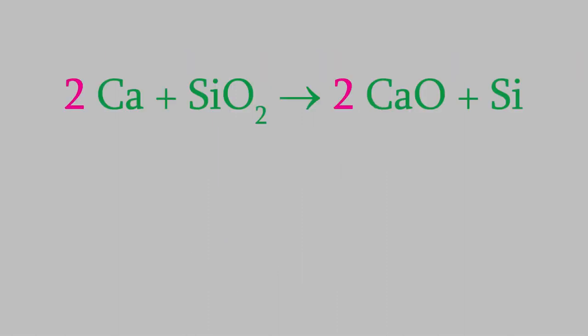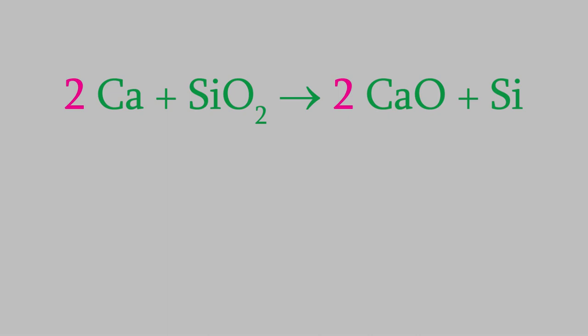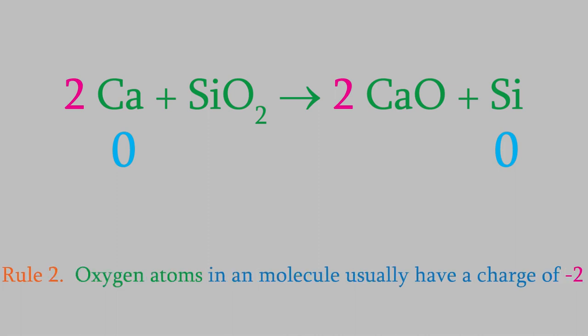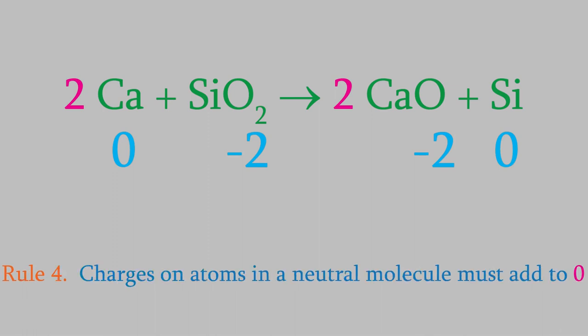So, back to our redox reaction. Let's use the rules we just talked about to find the charge on each atom. Rule one tells us that any pure element has a charge of zero, so the calcium on the left and the silicon on the right have a charge of zero. Rule two tells us that any oxygen in a molecule will have a charge of minus two, so that takes care of all of our oxygens. Rule four tells us that charges in a neutral molecule must total zero — in the case of silicon dioxide, the silicon must have a charge of plus four to counteract the two oxygens, and in the case of calcium oxide, the calcium must have a charge of plus two.